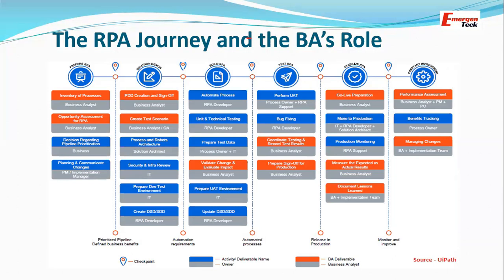After moving to production, the BA's role is not over. The BA measures expected versus actual results — verifying whether the ROI initially calculated, such as dollar savings and time savings, is actually being achieved. The BA also documents lessons learned — what went wrong and what went well, and how to improve. In the Continuous Improvement stage, any changes or enhancements are also taken care of by the business analyst.